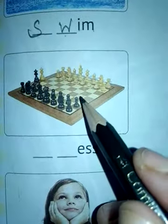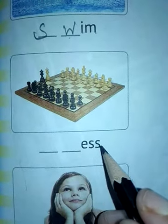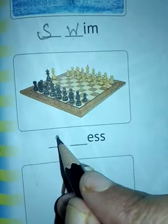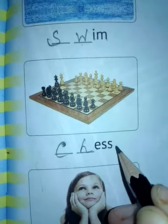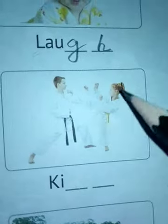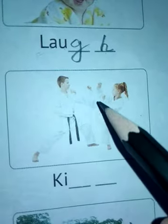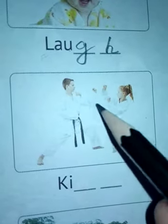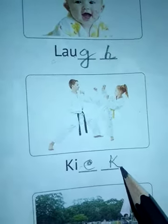Next is a chessboard. Chess spelling: C, H, E, S, S. C and H are consonants. Next picture shows a karate action — a forceful attack with the foot, called kick. Kick spelling: K, I, C, K. C and K are consonants.